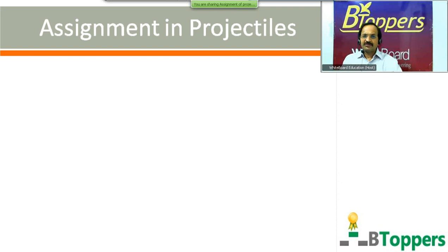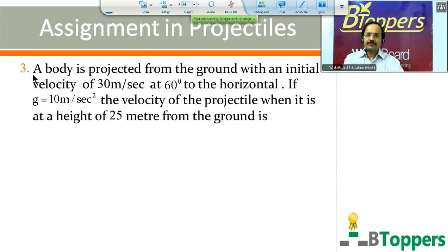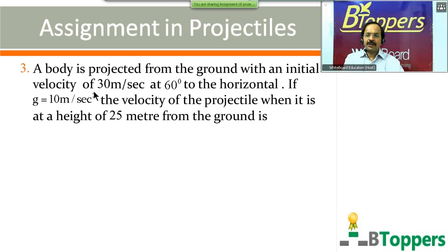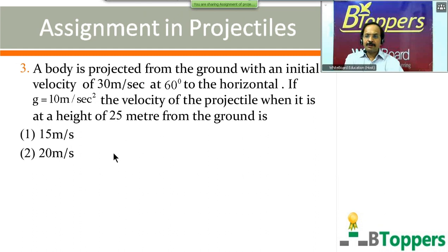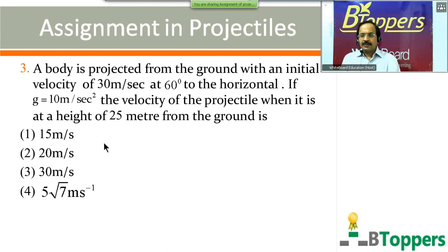Question number 3: a body is projected from the ground with an initial velocity of 30 meter per second at 60 degrees to the horizontal, g = 10 m/s². The velocity of the projectile when it is at a height of 25 meters from the ground is — options: 15 m/s, 20 m/s, 30 m/s, or 5√7 m/s. Come on, try the question — it's not a lengthy problem.